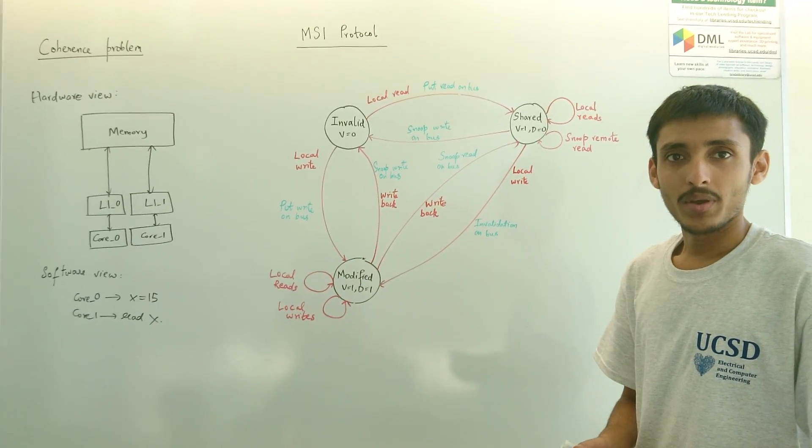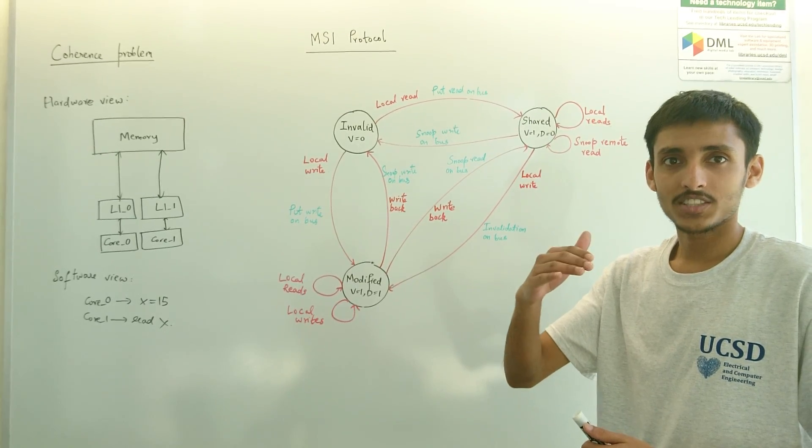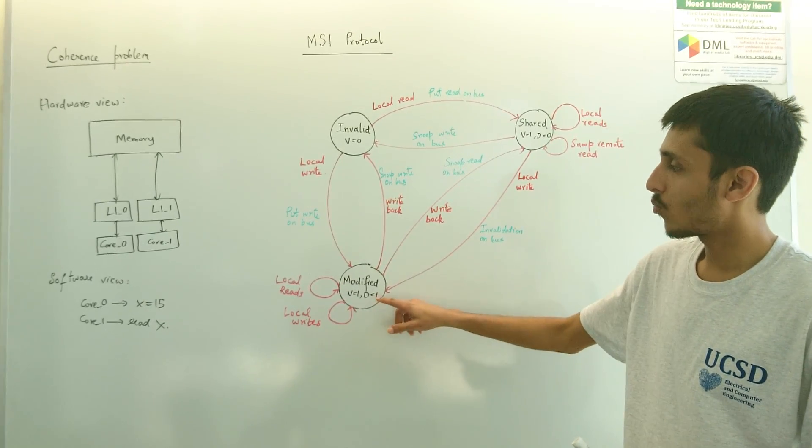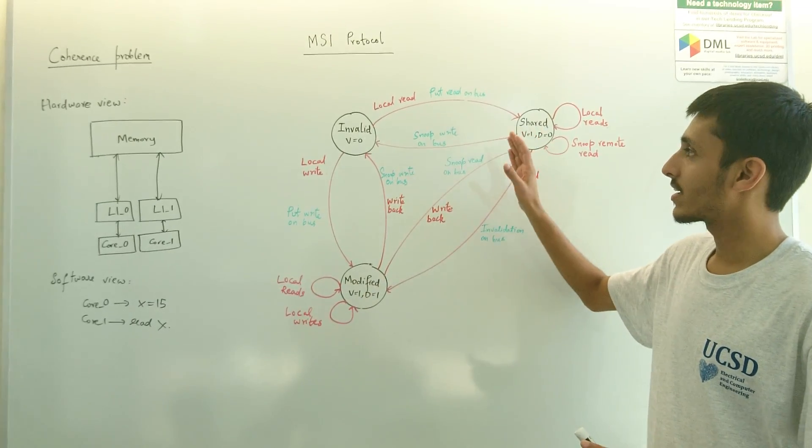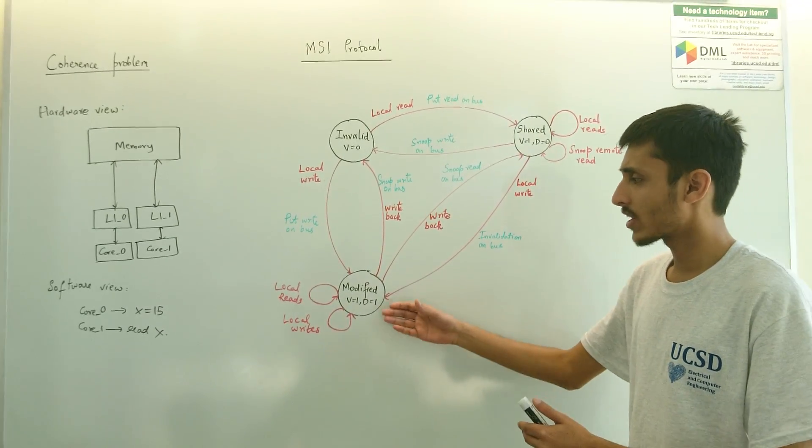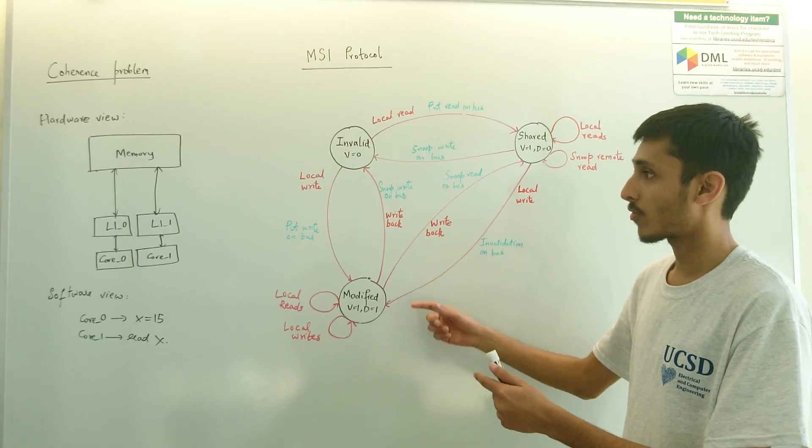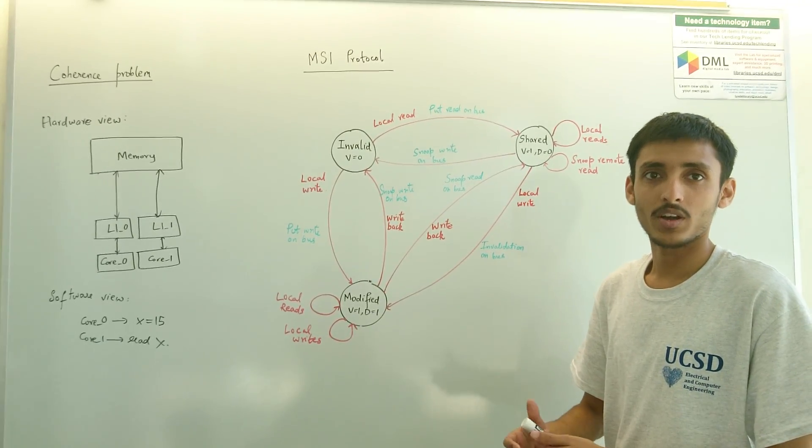The MSI protocol basically ensures that a line on every cache will have one of the following states: a modified state, a shared state, and an invalid state. Let's talk about what each of these states mean and how they move from one state to the other to ensure a coherent protocol.